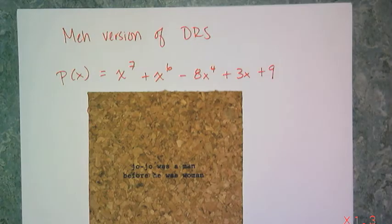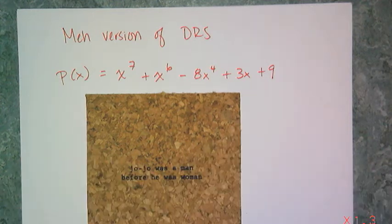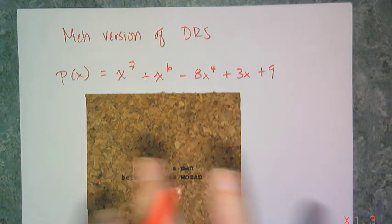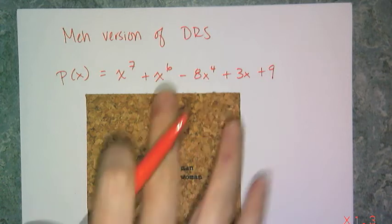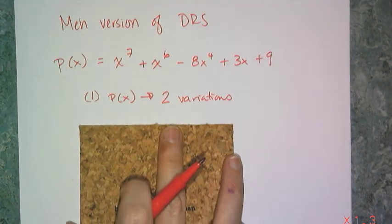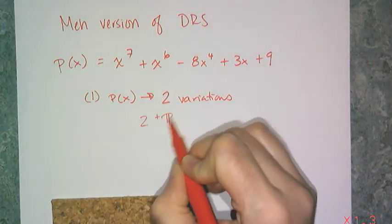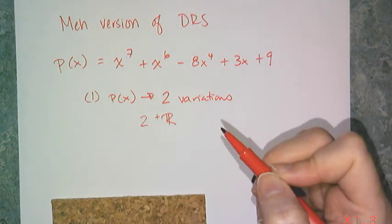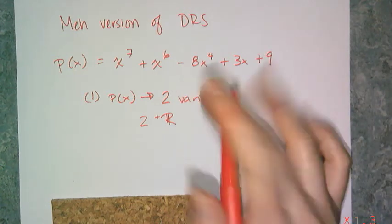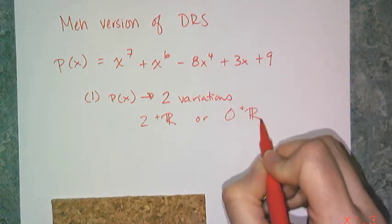Now let's look at the meh version of Descartes' rule of signs, and you'll see why in a second. If I have this polynomial — it's pretty long, there are 5 terms — there are 2 variations of sign. So 2 variations means there are either 2 positive real roots, or decreased by an even number, meaning there can also be 0 positive real roots.